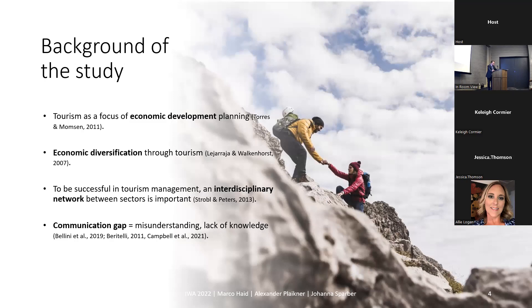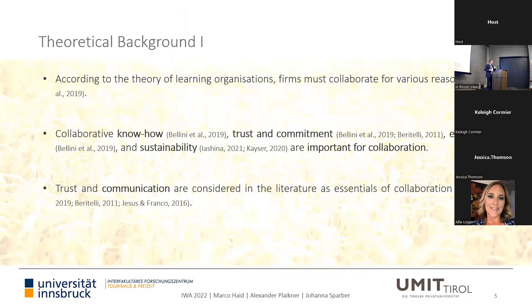Tourism as a focus of economic development planning, and economic diversification through tourism: to be successful in tourism management, an interdisciplinary network is needed between agriculture and tourism. We have a communication gap because both sectors don't speak much to each other, and when they do, it's quite controversial.